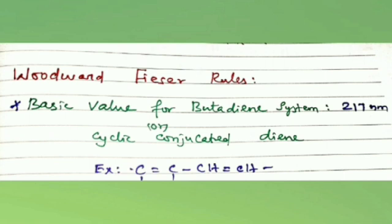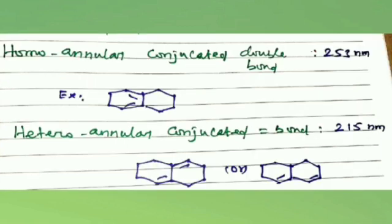The basic values for some compounds are as follows: for a cyclic conjugated diene or heteroannular diene system (C=C-C=C), the basic value is 217 nanometers. For a homoannular system, the basic value is 253 nanometers.